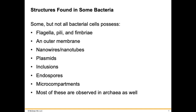Structures found in some bacteria include flagella, pili, and fimbriae. We're going to learn all about what each of these things are as we go through this chapter. There are also outer membrane nanowires or nanotubes, plasmids, inclusions, endospores, and micro-compartments. Many of these are observed in Archaea cells as well.